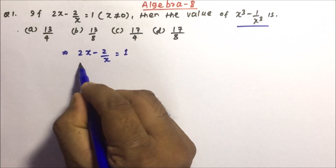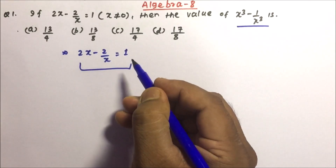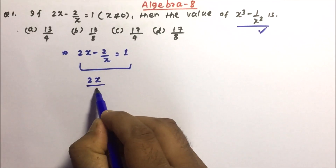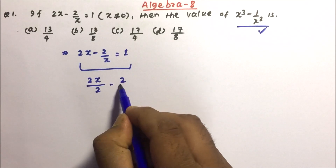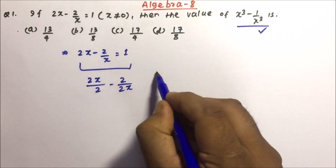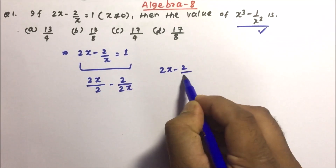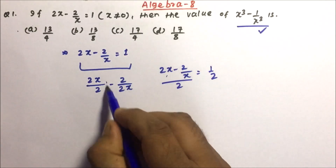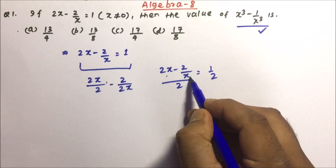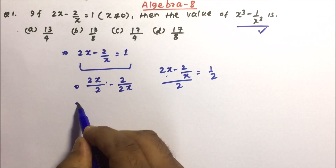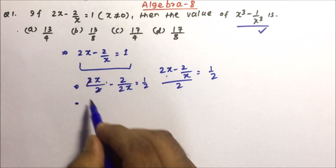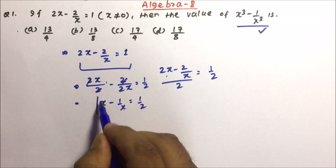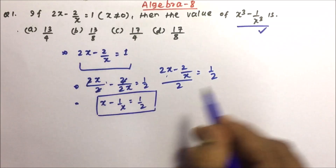What I will do here is divide this equation by 2, because I need to bring it into the standard format. So 2x minus 2 by x divided by 2 equals 1 by 2. When I divide, 2x by 2 minus 2 by x also gets divided by 2, and this becomes x minus 1 by x equals 1 by 2.